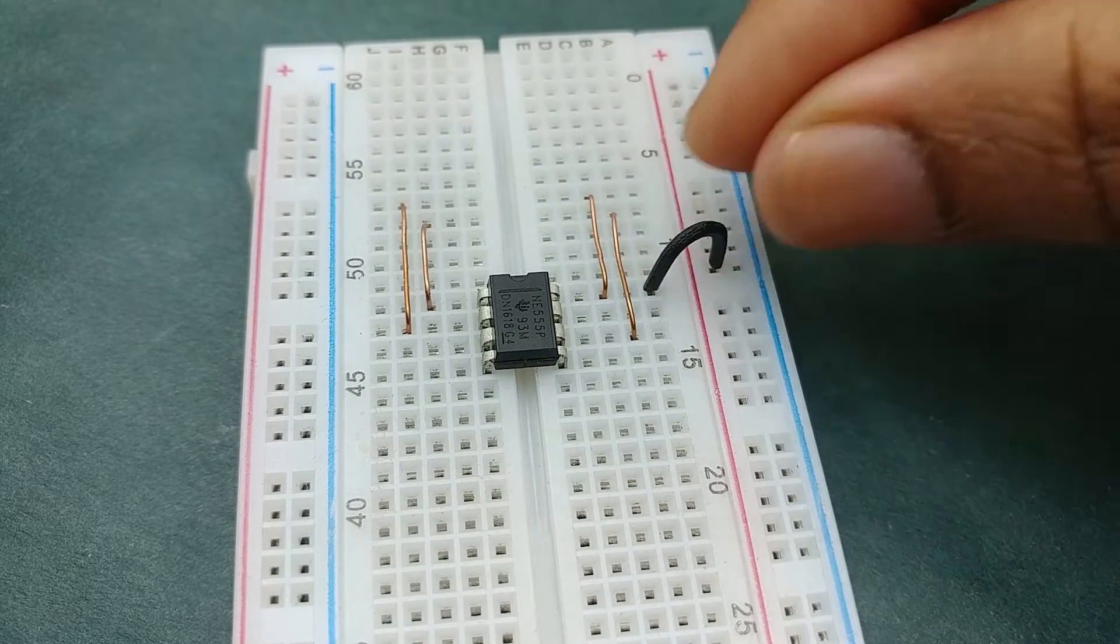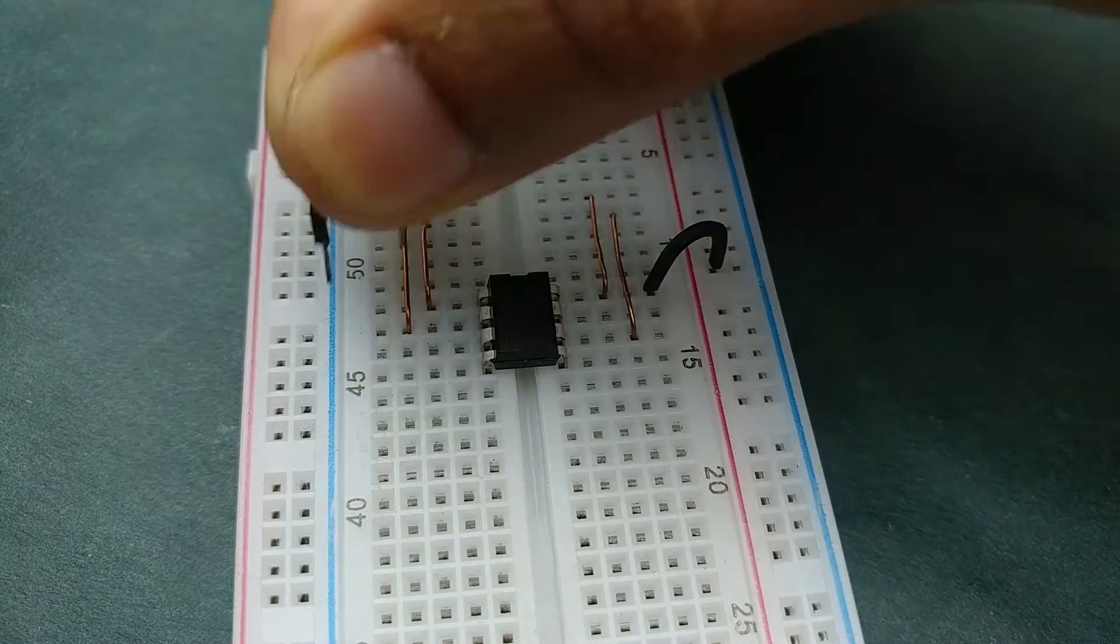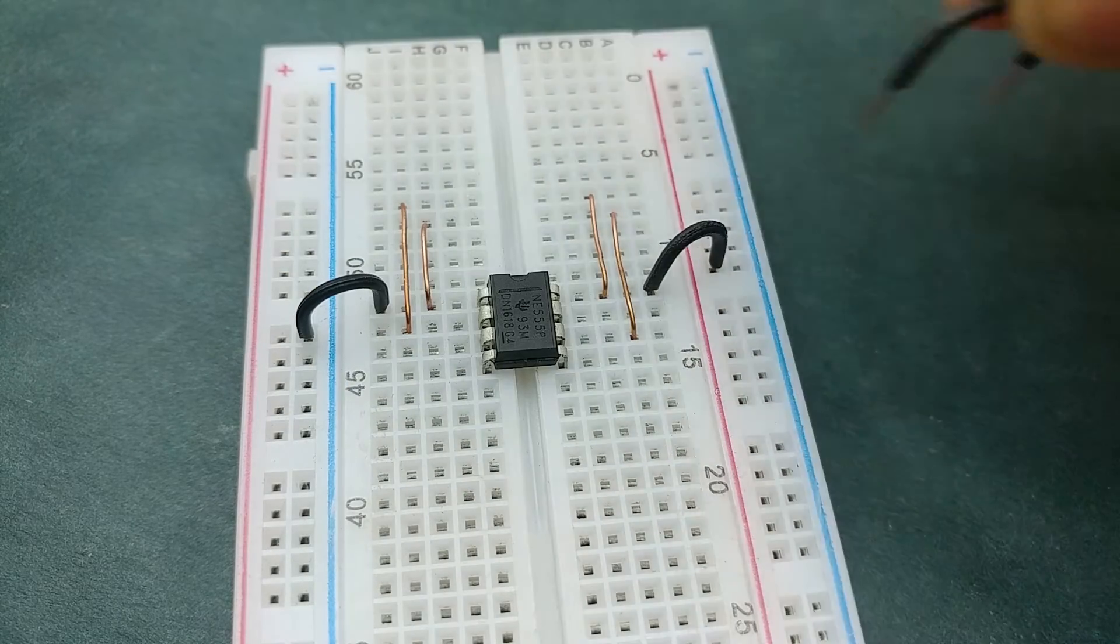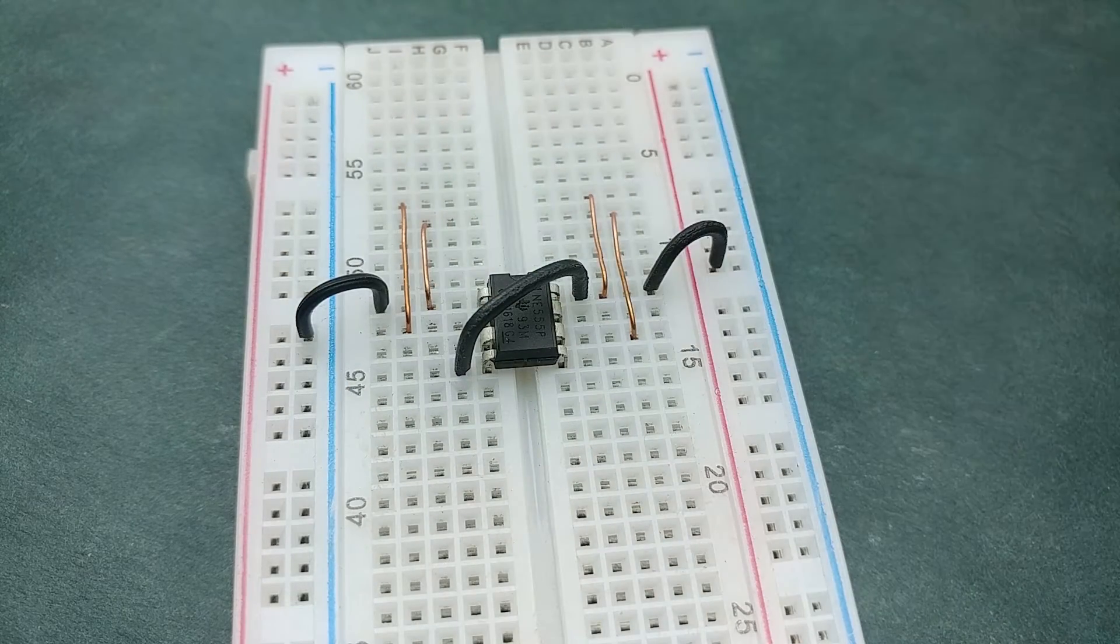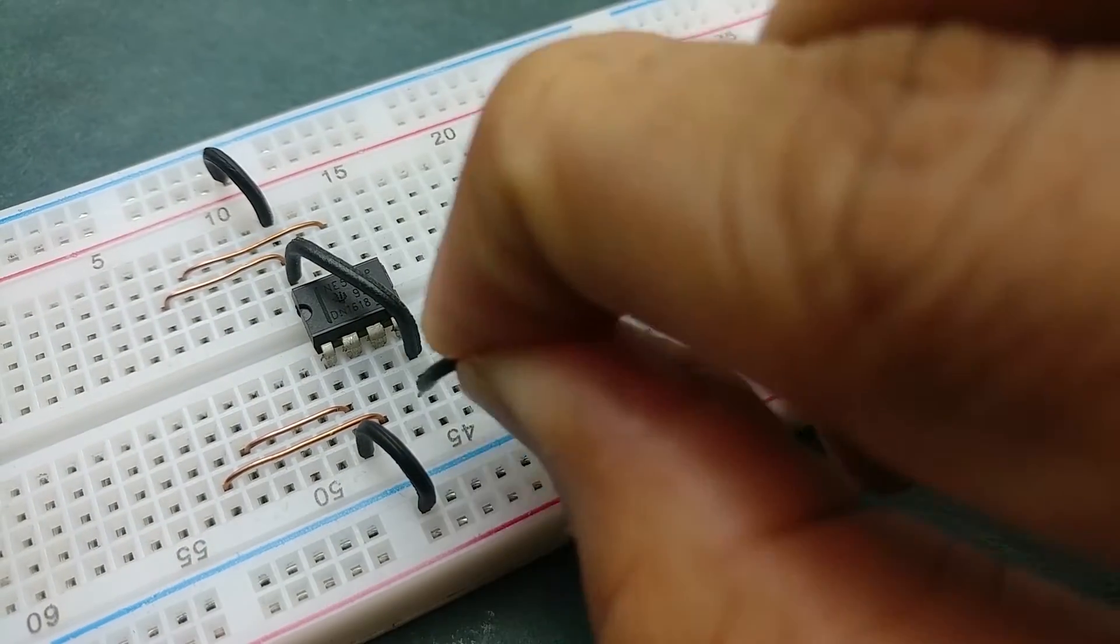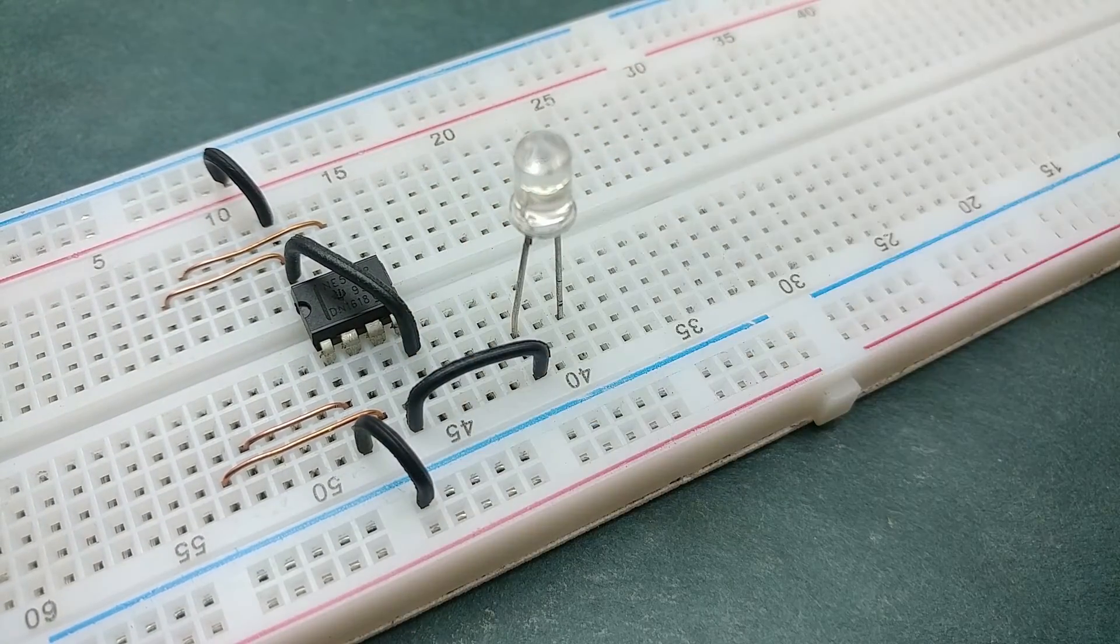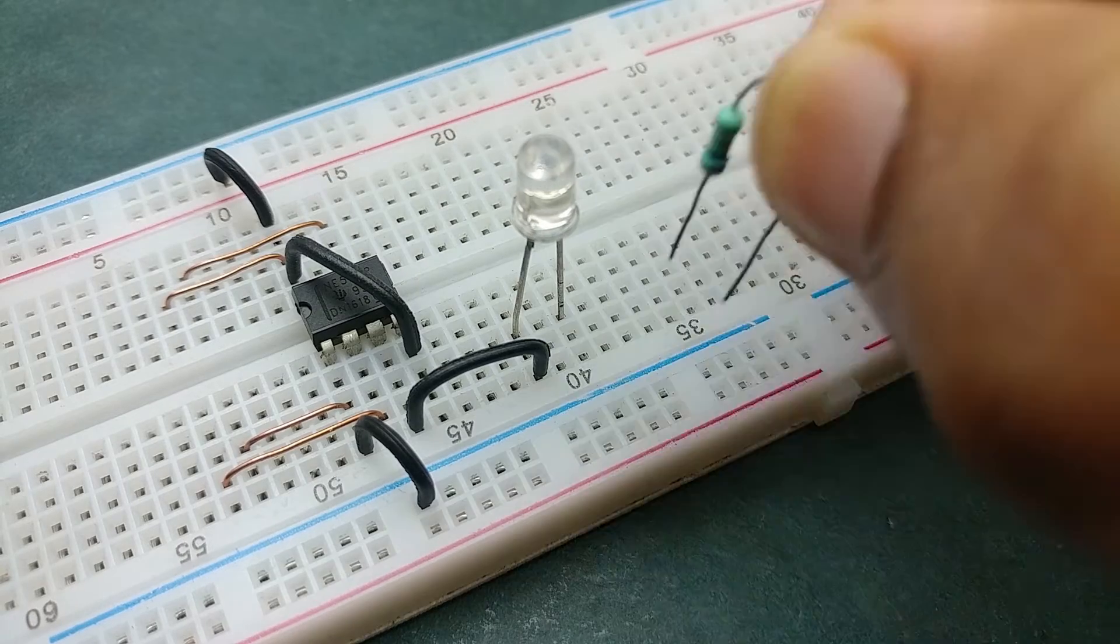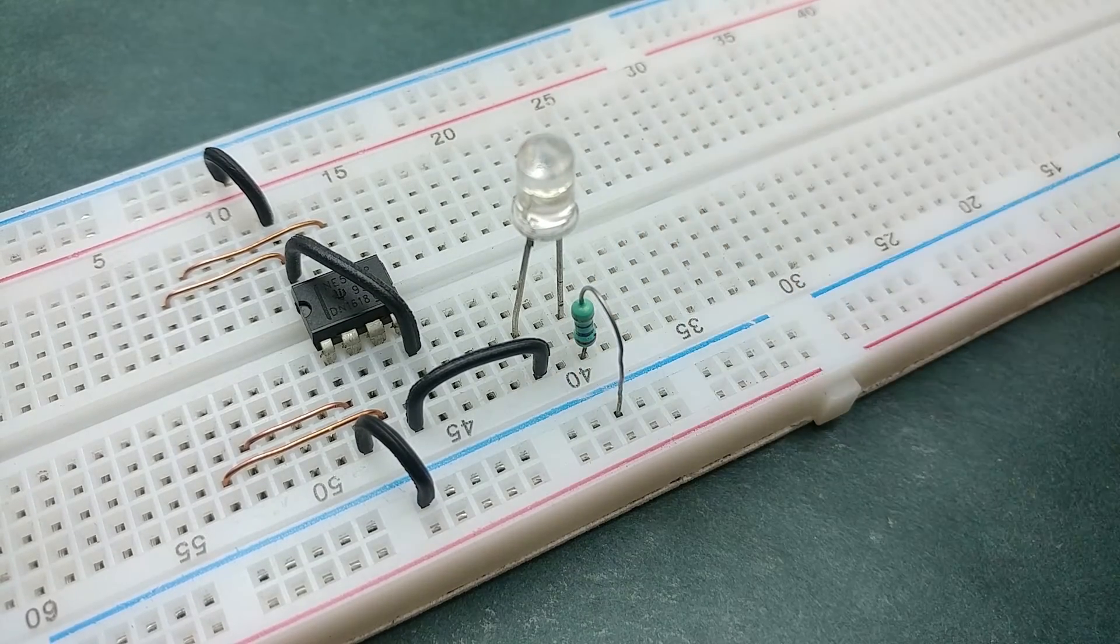Connect pin 4 of the IC to positive rail and pin 1 to negative rail. Connect the reset pin which is at pin 4 to pin 8. Now place an LED on the breadboard. Connect its anode to the output of 555 timer IC which is at pin 3 and connect its cathode to negative rail via a 270 ohm resistor.